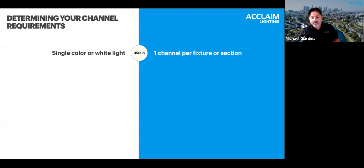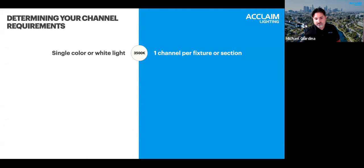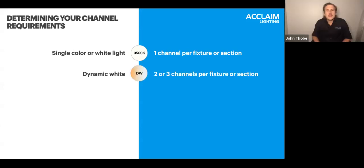Your channel count will depend on the type of color arrangements your fixture has. If you have a single color or white light fixture, it will require a single DMX channel per fixture or per group of fixtures. This is typical of our Linear One product or any other product that requires a single channel of DMX — white lights, basically.